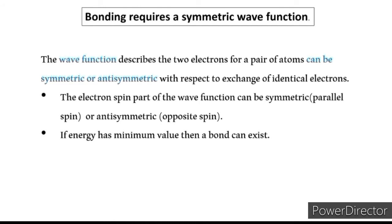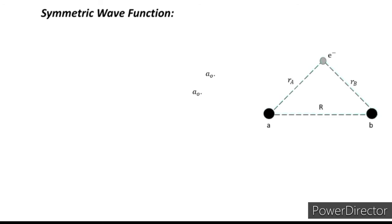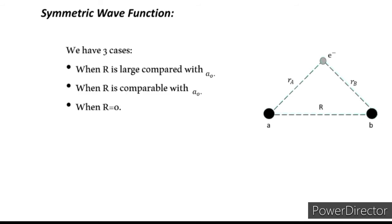We have ψ, the wave function of the only electron. In the symmetric wave function case, let's draw a figure. We have a nucleus — a proton — which we call A, and another nucleus at some distance R which we call B. Both nuclei share one electron. The distance between nucleus A and the electron is r_A, and between nucleus B and the electron is r_B. We consider three cases: when R is large compared to a₀, when R is comparable with a₀, and when R equals zero. Here a₀ is the radius of the smallest Bohr orbit in the hydrogen atom.